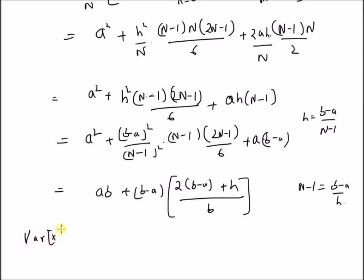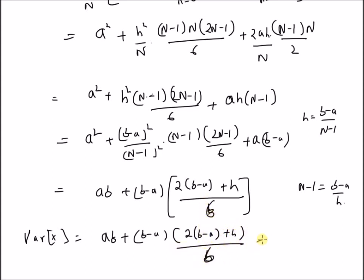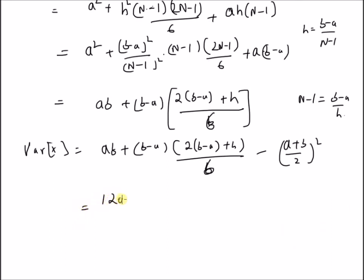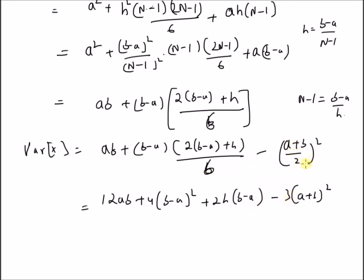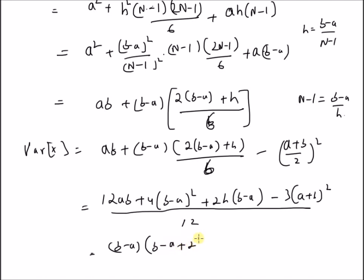The variance of x is equal to the second moment — a into b plus b minus a into 2 times b minus a plus h, divided by 6 — minus the square of the mean, which is a plus b divided by 2, whole square. Upon simple algebraic manipulation, using an LCM of 12 and multiplying numerators accordingly, we get b minus a into b minus a plus 2h divided by 12.